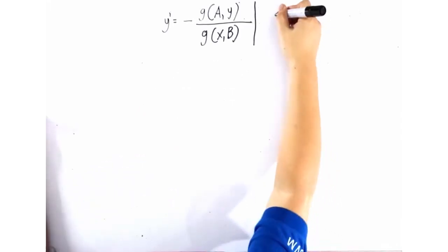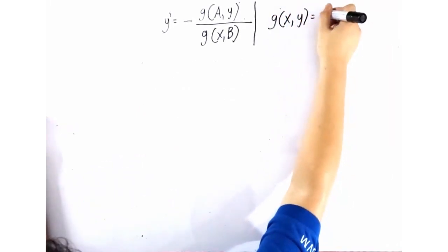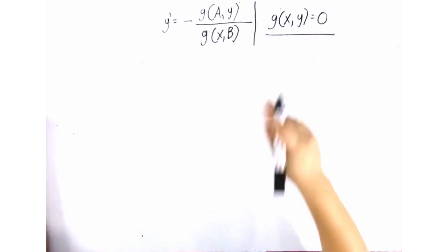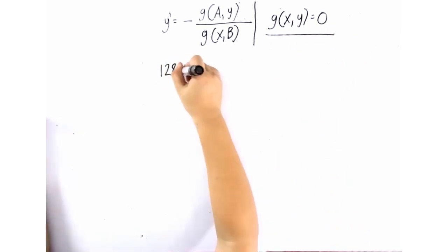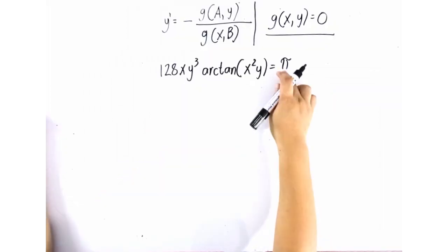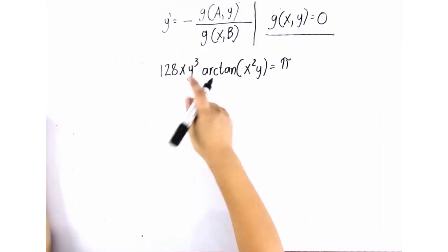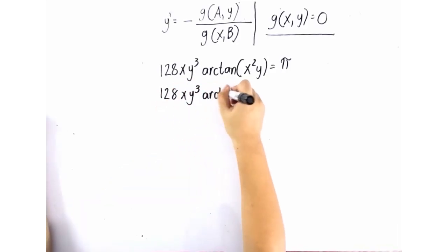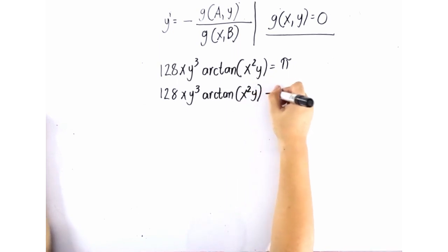So how are you going to use this technique? The first step is to write in such a way that the right side of the equation is equal to zero. So 128xy cubed arctan x squared y is equal to pi. So you make sure that the right side of our equation is zero. You just transpose the pi to the left side of the formula. So this one will become now 128xy cubed arctan x squared y minus pi is equal to zero.